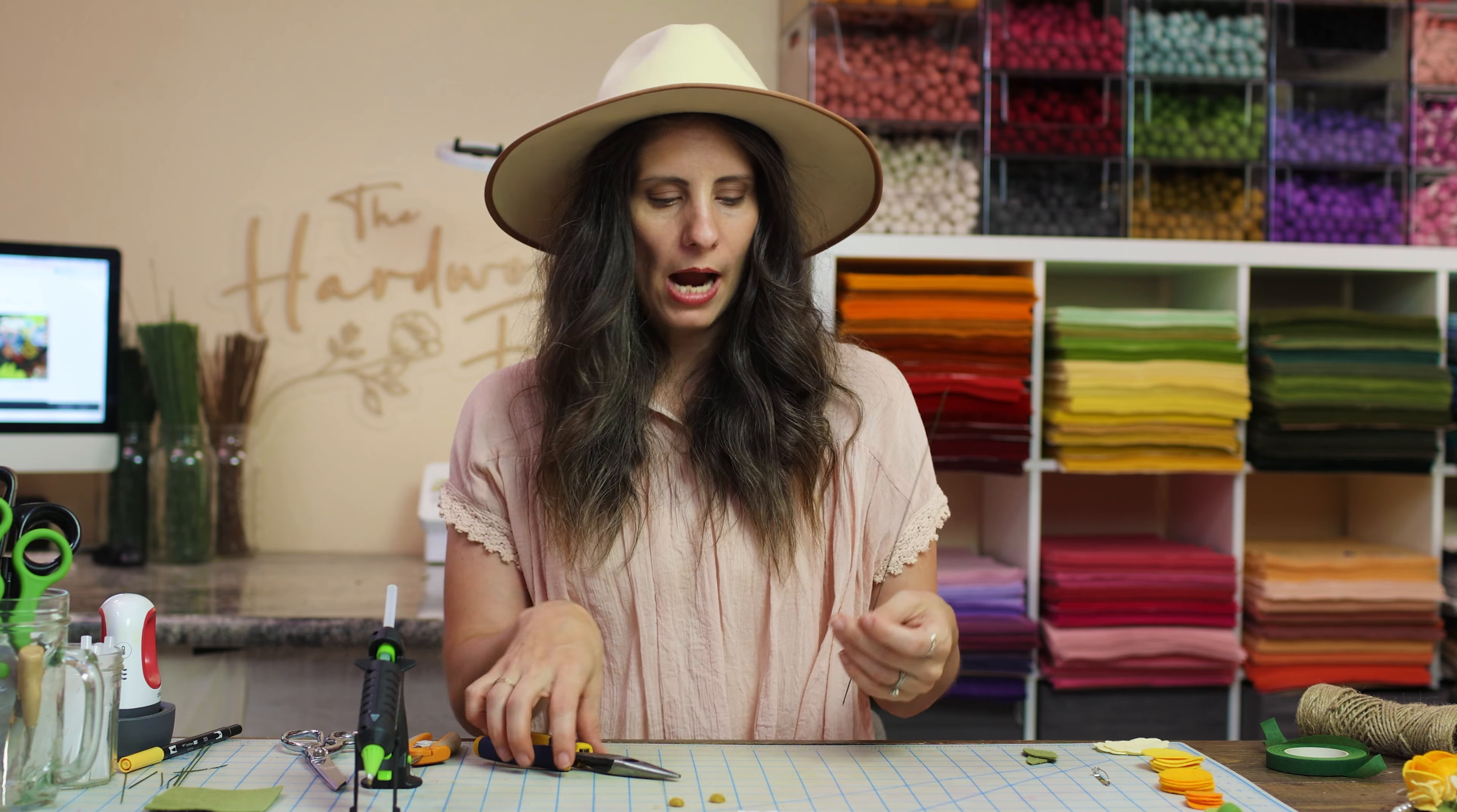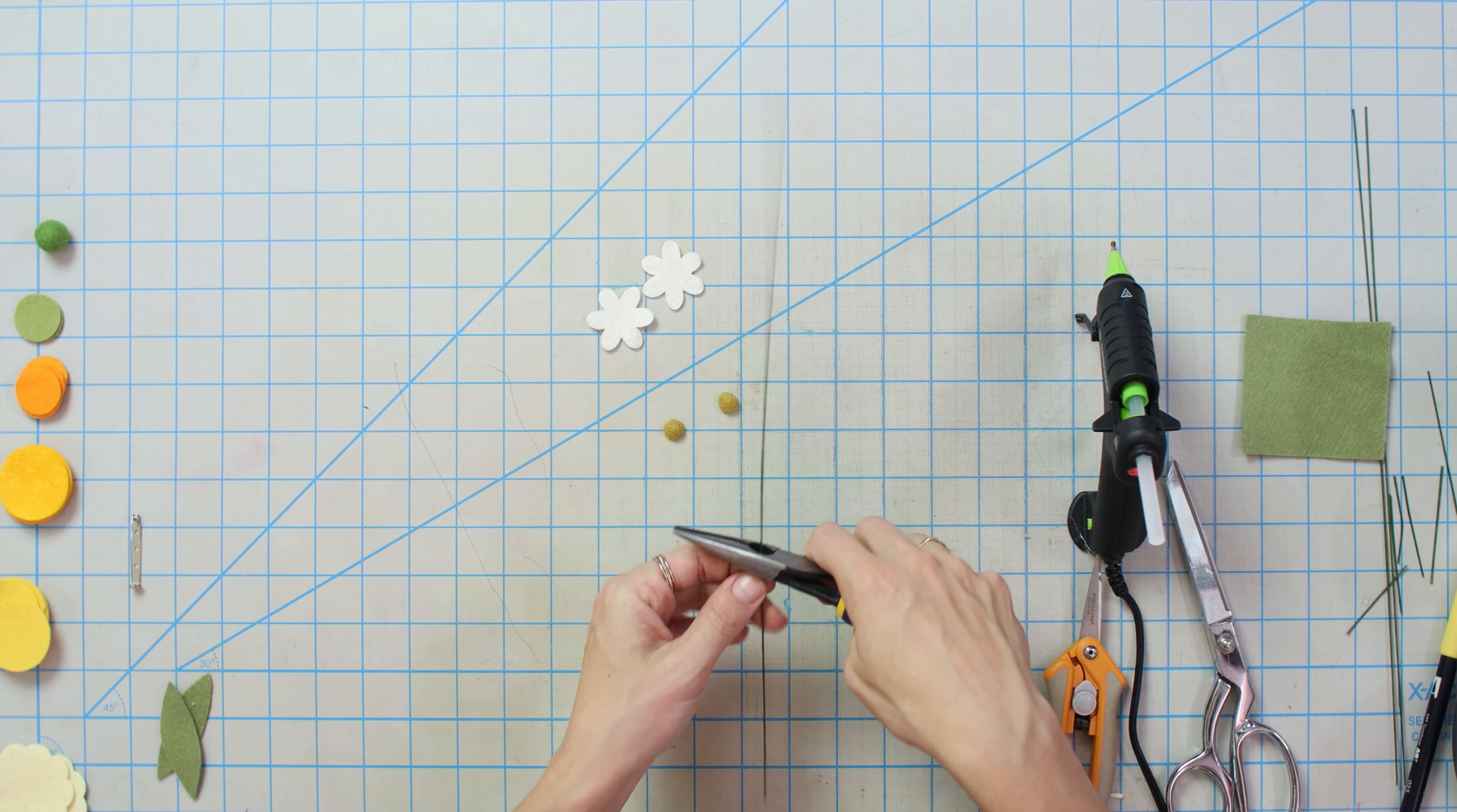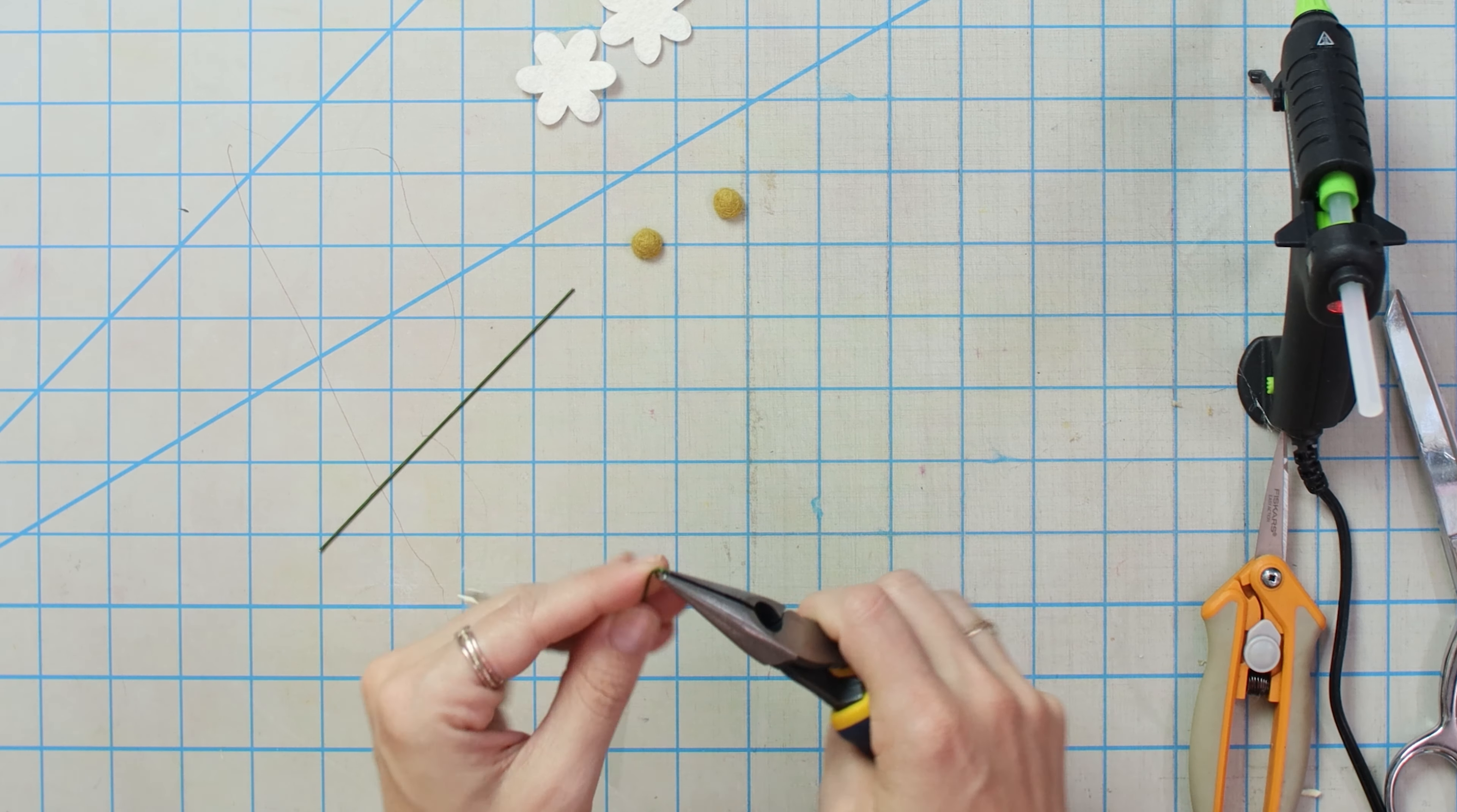Next thing, we're going to go ahead and get some 22 gauge wire. We're going to keep this relatively long because it's a boutonniere and we want all the stems to have some place to go and some room to wrap. So, let's do about 5 inches.